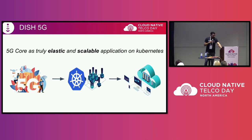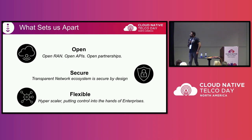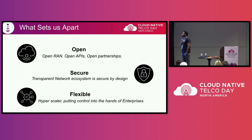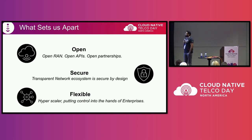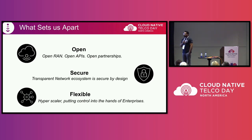The next guiding principles we worked on are building an open network and a secure network. When I say open, it's not a buzzword for us. We wanted to build a network working with our partners — we are multi-vendor. We pioneered the open RAN setup, and when we say open APIs, all the information the network is generating, from Kubernetes up to the network functions and the services running on top, we want to expose all of those as APIs for our vendors and for individual developers who can build apps on top of our infrastructure.